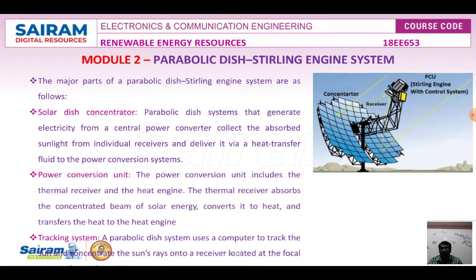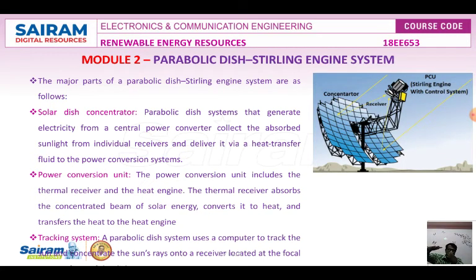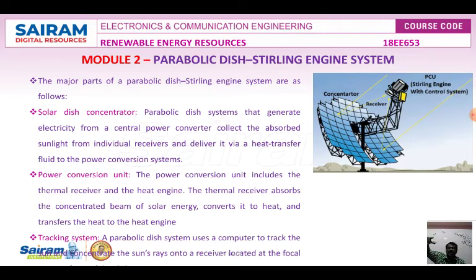The power conversion unit includes the thermal receiver and the heat engine. The thermal receiver absorbs the concentrated beam of solar energy and converts it into heat. That heat is transferred to the heat engine, which has a piston fixed in a chamber. Based on the temperature in the chamber, the piston moves; according to the piston movement, the shaft rotates and drives the generator to produce electricity.